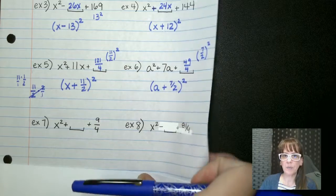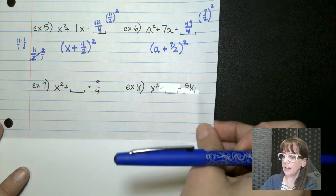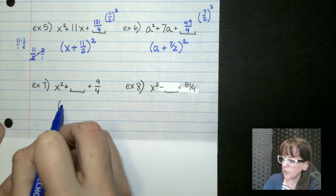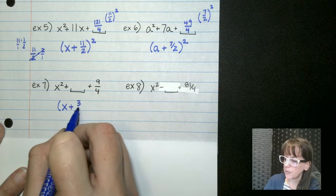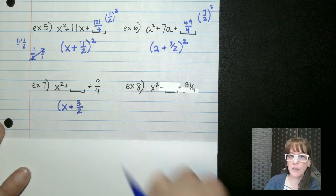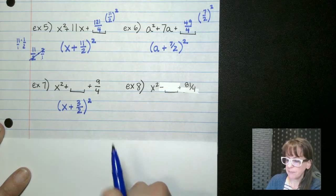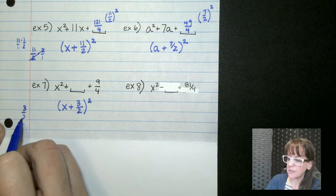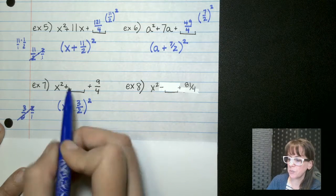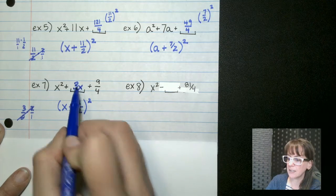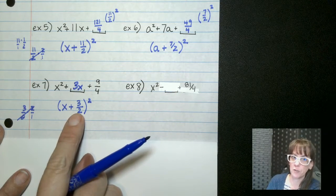So this is another one where we have to figure out that middle term. Well, remember, we go like this x, and then we bring down this sign. So plus 3 halves, because that's the square root of 9 over 4. We take these two things, and we double it. So 3 halves times 2. Notice that we can cancel out those twos. We're left with 3x, so 3x would need to be in our linear term in order for this to be a perfect square trinomial.